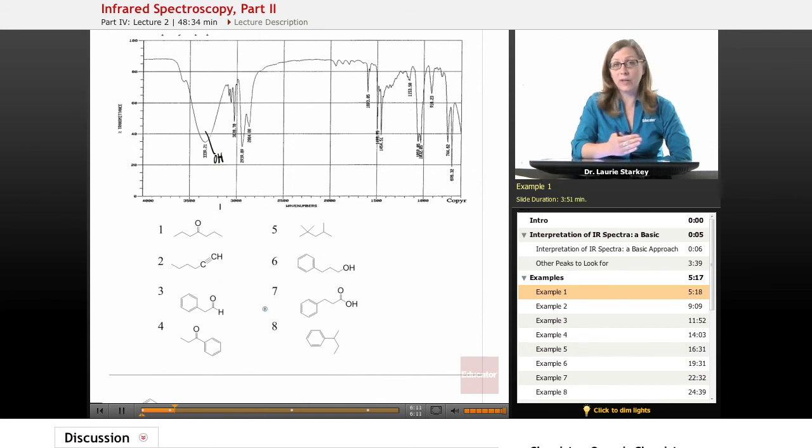Okay then we continue reading left to right. We move to this 3000 mark and we look to just above 3000 for peaks, and sure enough we see some peaks here. We also see some peaks just below 3000. So what does that tell us? Just above 3000 is where we find SP2 CHs and just below 3000 is where we find SP3 CHs. We continue reading. We go to 2200. Do we have a triple bond? There's no triple bond there.